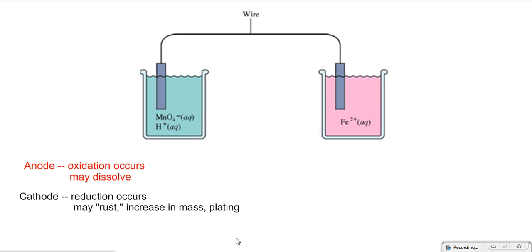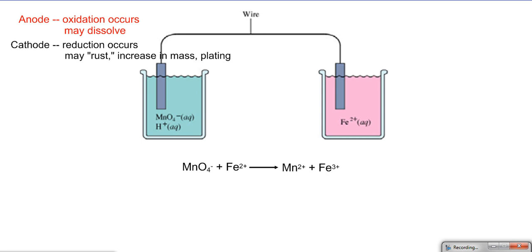So here we have a galvanic cell where permanganate is undergoing a redox reaction, and so is iron two. So let's start by breaking this into the two half reactions that are occurring.